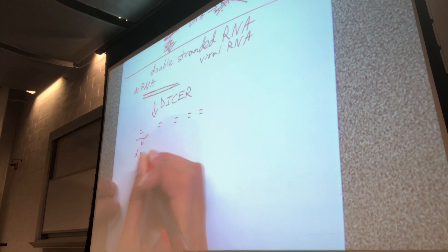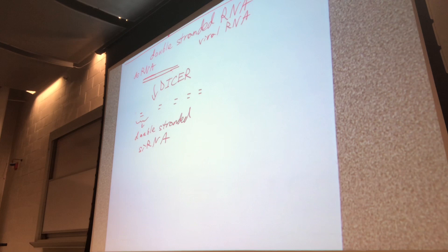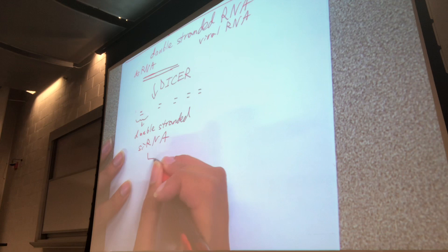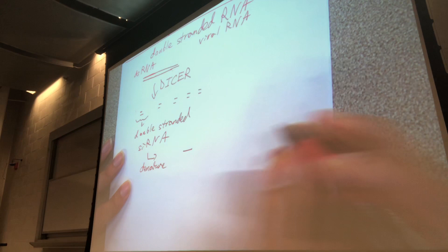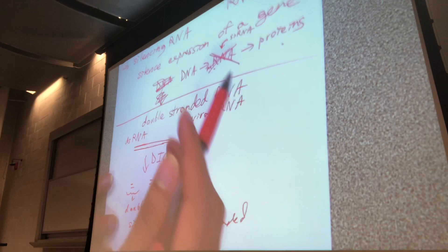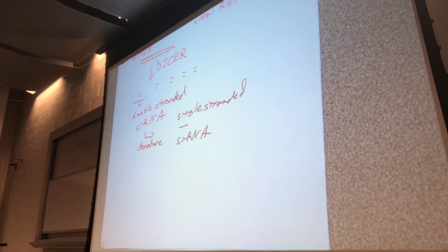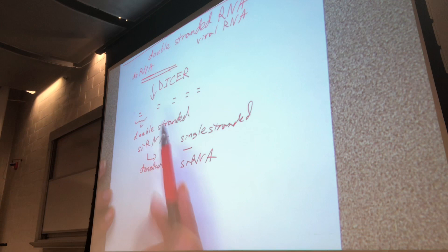Each tiny piece is double-stranded siRNA. These short pieces are pretty unstable, so almost immediately each double-stranded piece of siRNA will denature to form single-stranded siRNA. This is why it's called short interfering RNA — it's a really small fragment of RNA made because the Dicer enzyme found double-stranded RNA and chopped it into pieces.